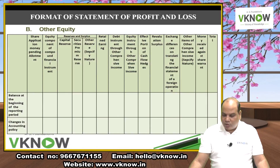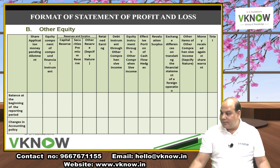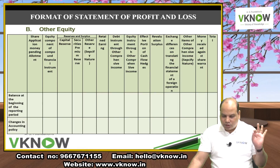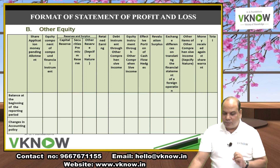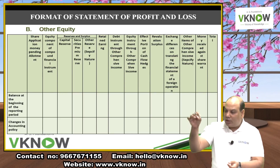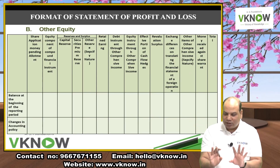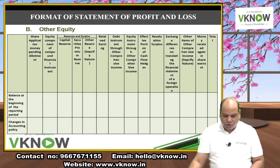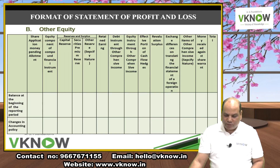Part 2 (Other Equity) includes: share application money pending allotment, equity component of compound financial instruments, reserves and surplus (capital reserve, securities premium reserve, other reserves like general reserve, retained earnings), OCI items such as debt instruments through OCI, equity instruments through OCI, effective portion of cash flow hedge, revaluation surplus, and exchange differences.